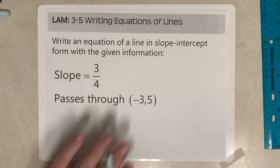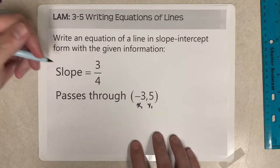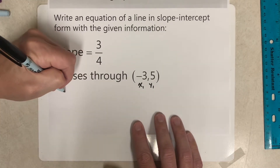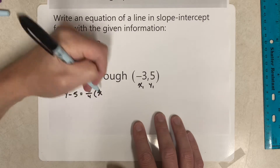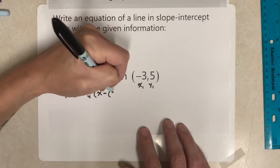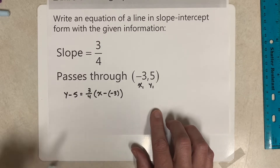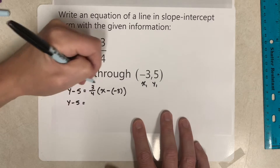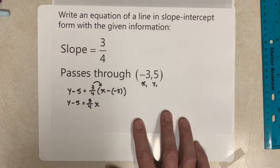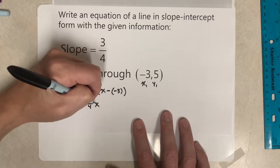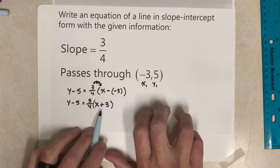Next one: slope of 3/4, x1 is negative 3, and y1 is 5. So we've got y minus 5 equals 3/4 times (x minus negative 3). I have to be really careful with negatives when plugging a negative in here, because there are already minuses in the formula. So x minus negative 3 is really x plus 3 — two negatives make a positive. Let's make that a plus 3 before distributing.